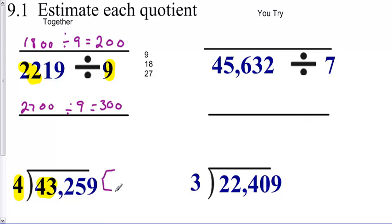Now here's the tricky one. If I count by fours until I get past 43. So 4, 8, 12, 16, 20, 24, 28, 32, 36, 40, 44. I passed it. It took me a while, but I got past it. So my two estimates are going to be 40,000 and 44,000.